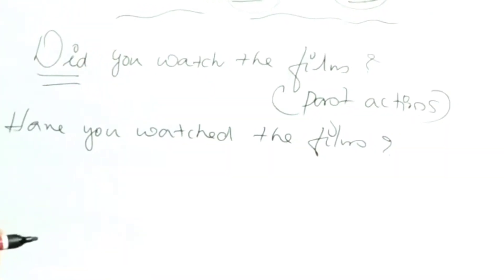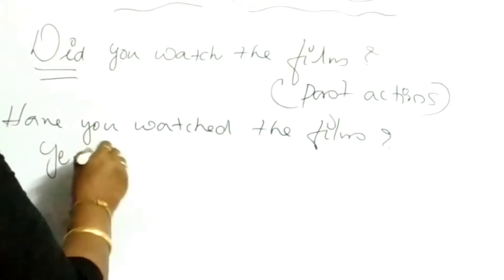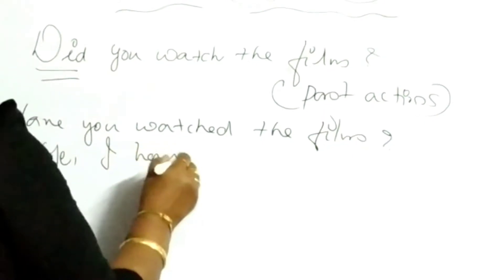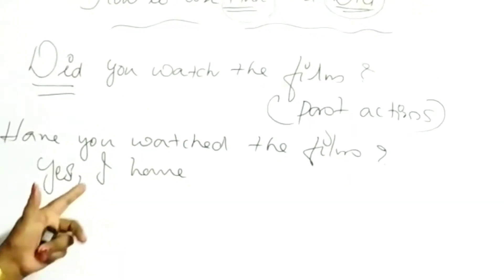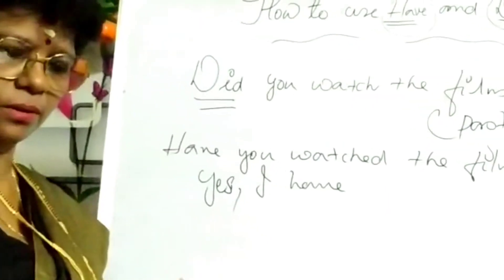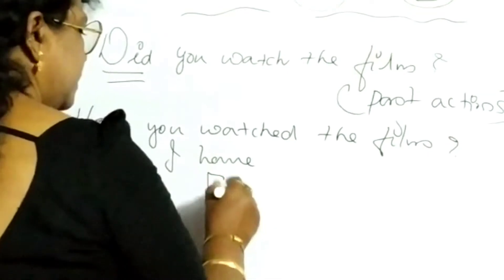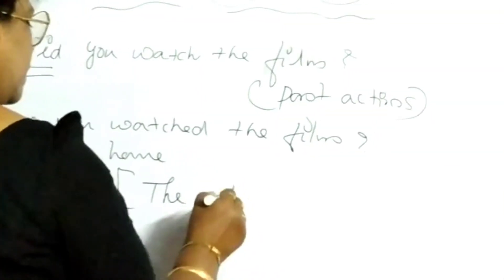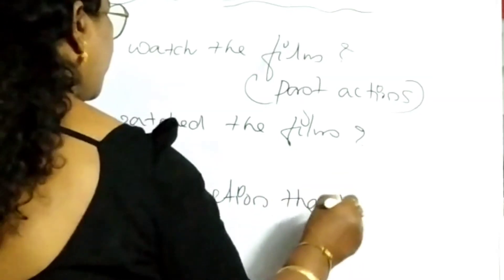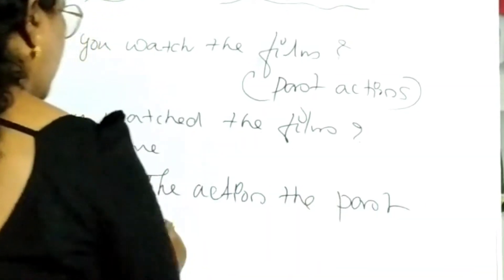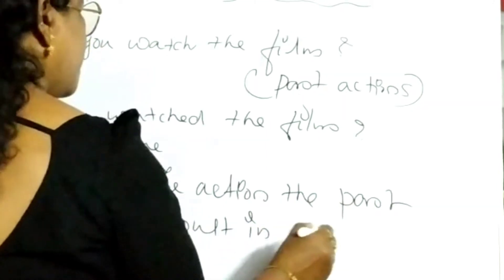'Have you watched the film?' The answer would be: 'Yes, I have.' Or 'No, I have not.' When we use 'have', the action is in the past but the result is in the present. Action in the past and result in the present.